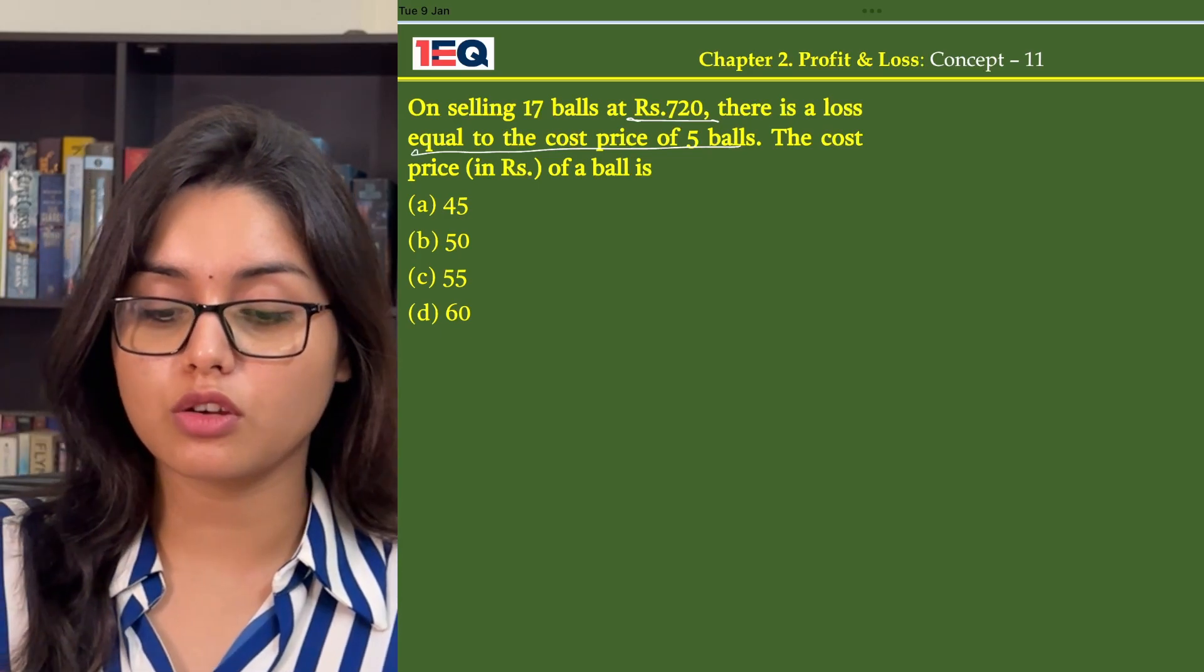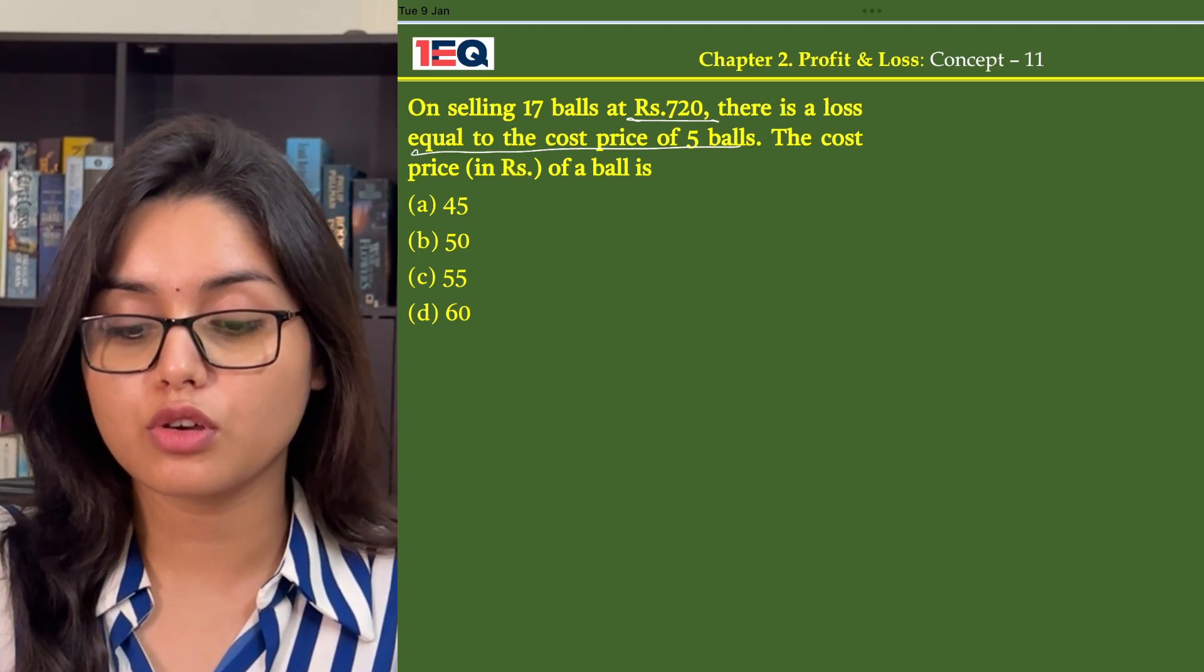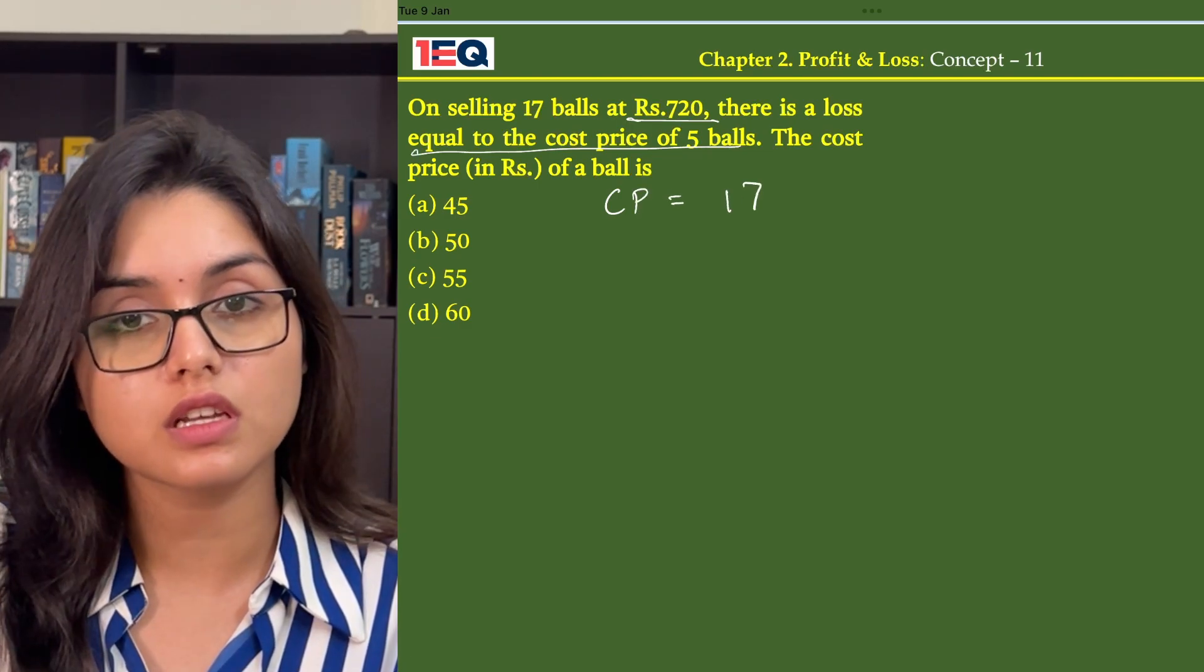Let's assume that the cost price of 1 ball is Rs. x. So the cost price of 17 balls will be 17x.